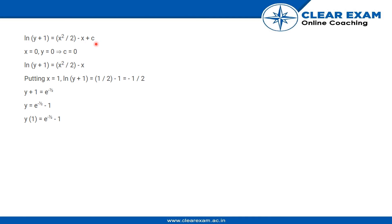It is given that when x = 0, y = 0. Putting those values, we get c = 0. Therefore the equation now comes out to be ln(y + 1) = x²/2 - x.